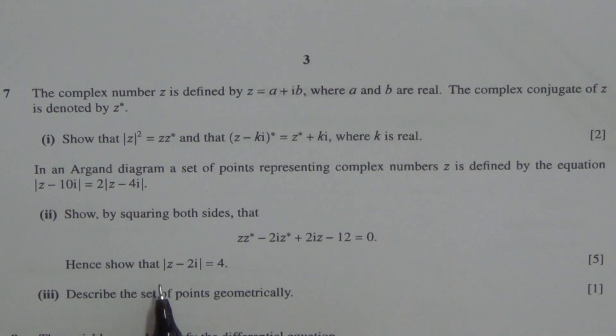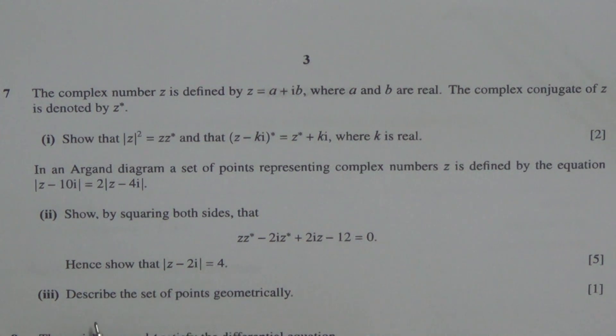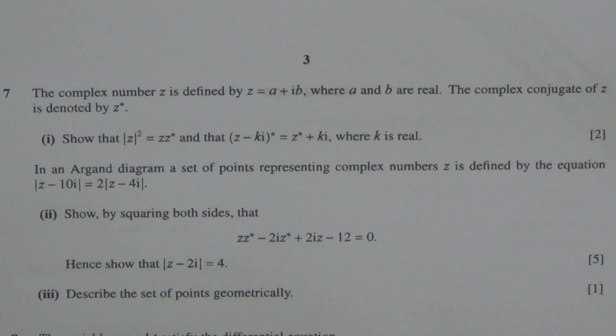Hence, show that the modulus of z minus 2i is equal to 4. And for the third part, describe this set of points geometrically.